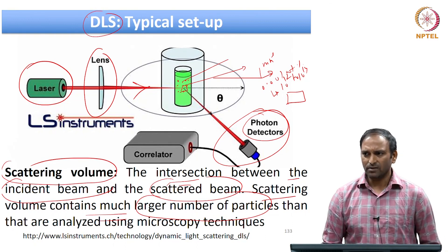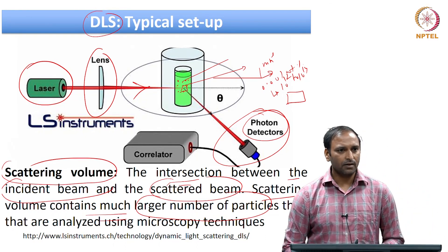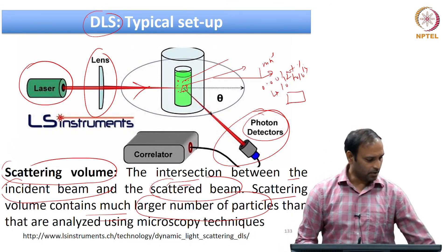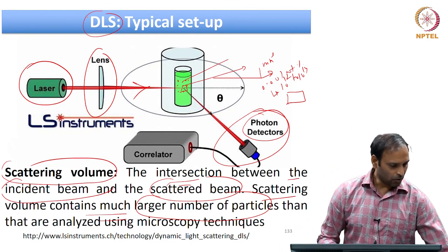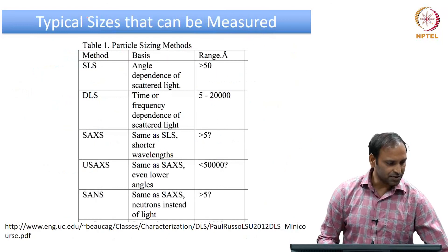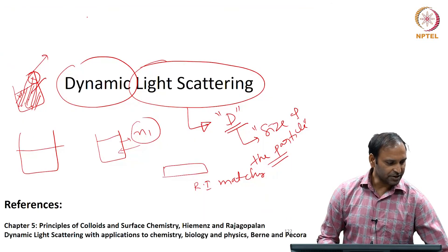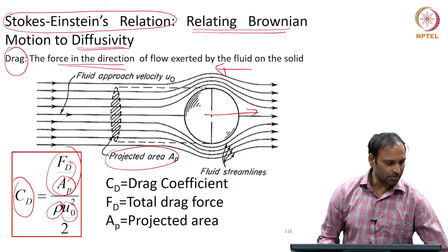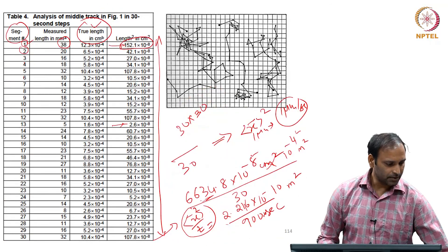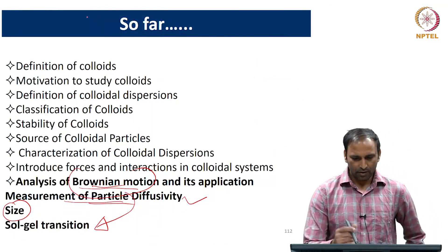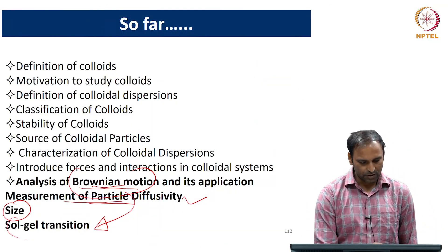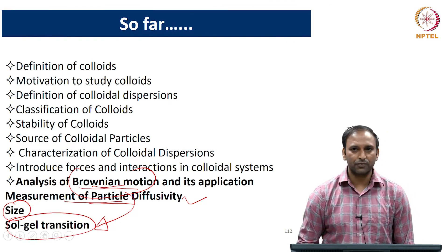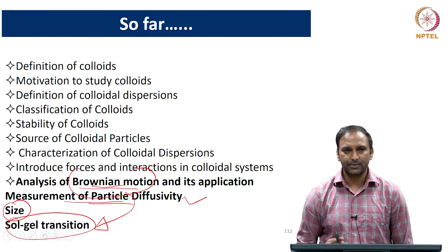Maybe I will stop here. We will continue talking about how does one use DLS for measuring particle size, plus we will also talk a little bit about using Brownian motion for looking at what is called a sol-gel transition. That is what we will try and do in the next class. Thanks.